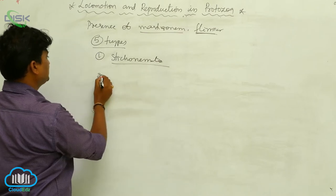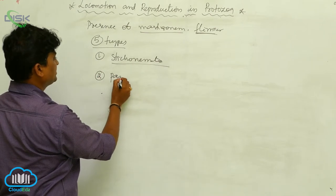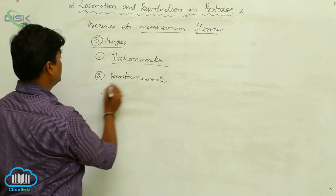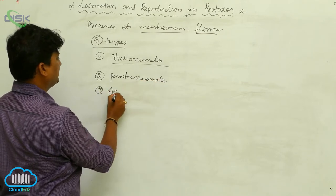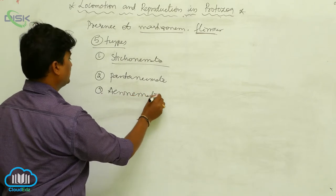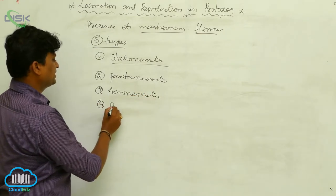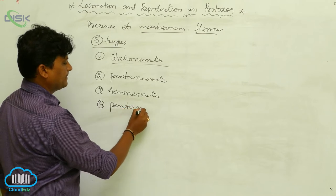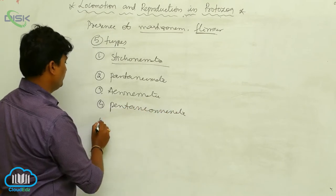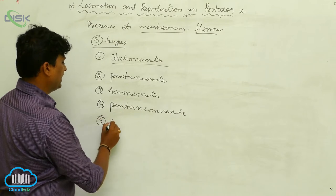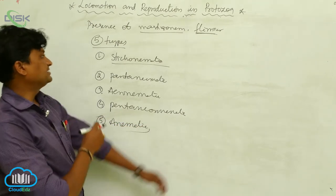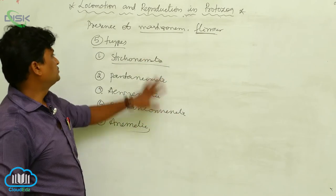The second type is pantanimatic, the third is acronymatic, the fourth is pentachronymatic, and the fifth is animatic. These are the five types of flagella.